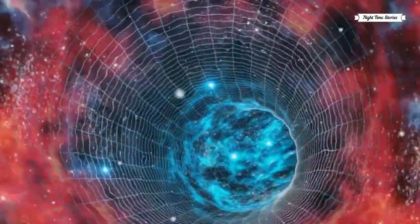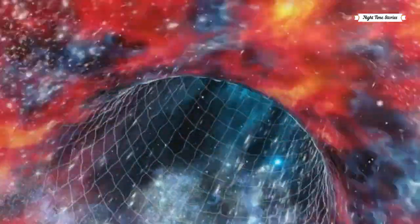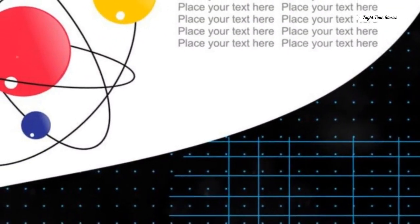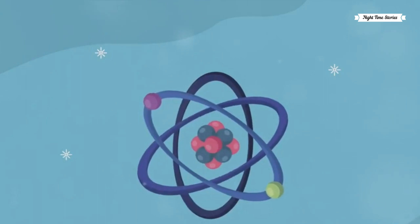The last two quarks, top and bottom, are the heaviest of the six. They were discovered in the 1970s and 90s respectively. The top quark in particular is about 350,000 times heavier than the up quark. These heavy weights are crucial in understanding the universe at its most fundamental level.